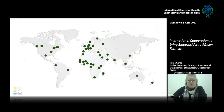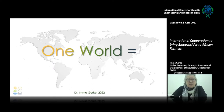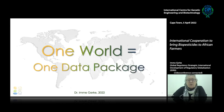Here you see the countries we are currently working in. South America comes a little short — I guess that's because I don't speak Spanish or Portuguese — but as they speak English, we are there anyway. From this map, you can see that we look at the world without political borders. There are no political borders on this map, and that is why we say: as there is only one world, there should only be one data package.